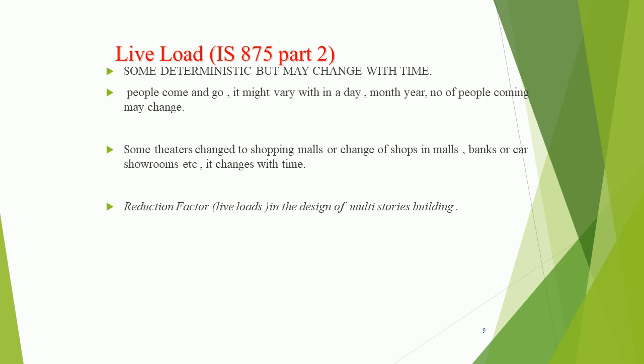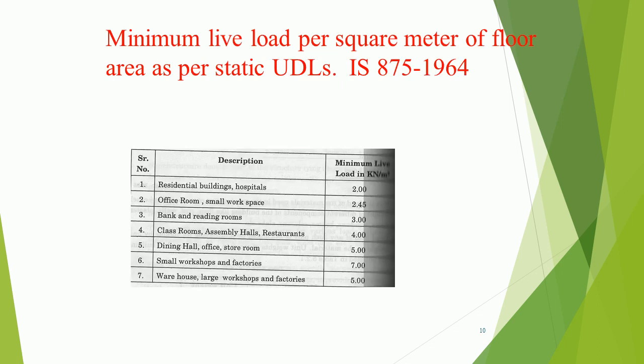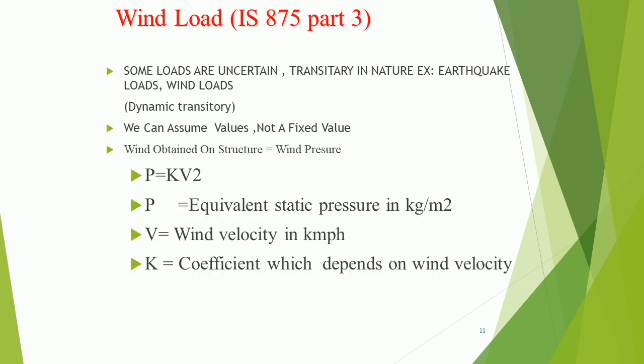Reduction factor for live loads in the design of multi-storey buildings. Minimum live load per square meter of floor area as per static UDLs, IS 875-1964. Wind load as per IS 875 Part 3 — some loads are uncertain and transitory in nature, such as earthquake loads and wind loads. Wind force obtained on a structure equals wind pressure: P equals K times V squared, where P is equivalent static pressure in kg/m², V is wind velocity in kmph, and K is a coefficient depending on wind velocity.